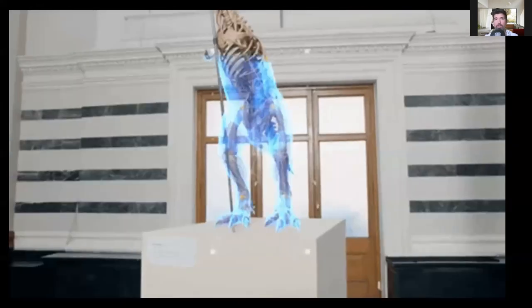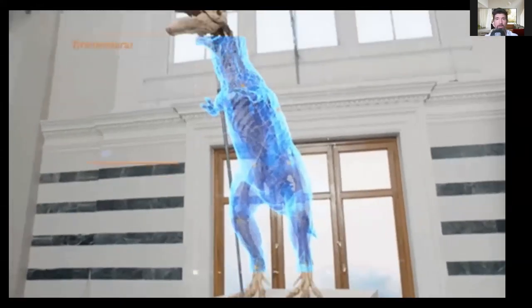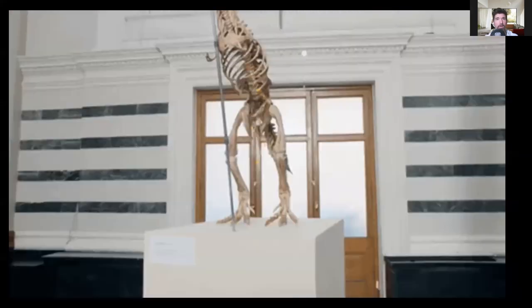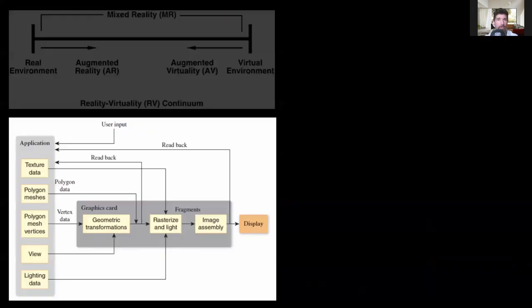This is understandable as most of our perception of the real environment is governed by the information we gather through our visual cortex. We observe the real environment through a specific light interaction with the matter that we mimic within the graphics rendering pipeline.